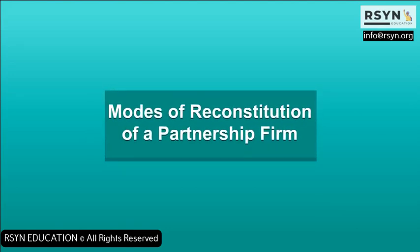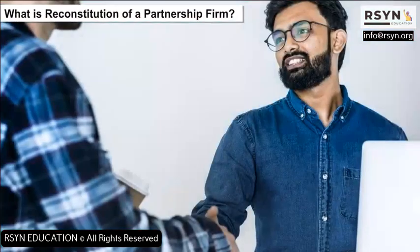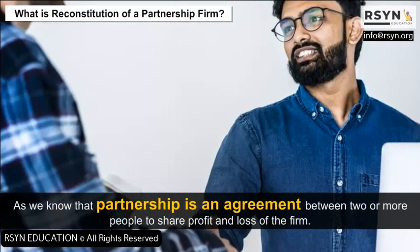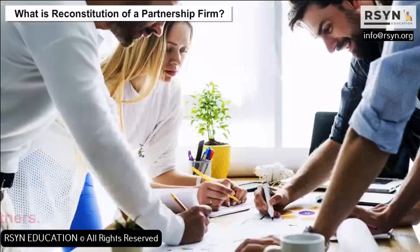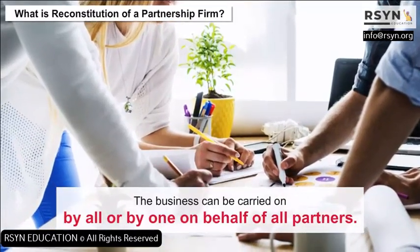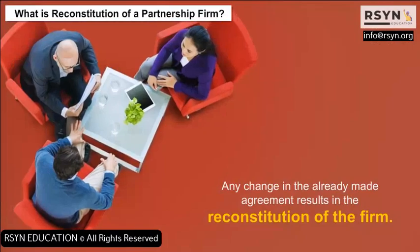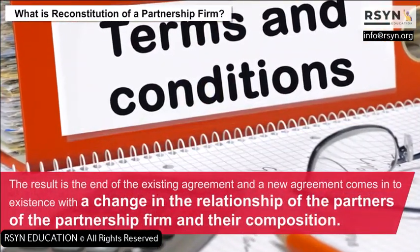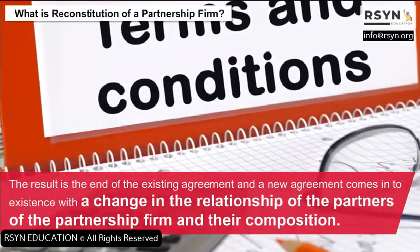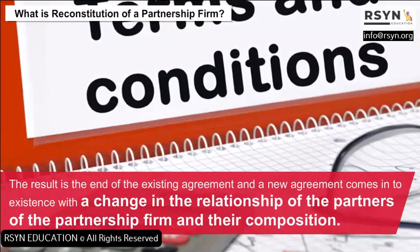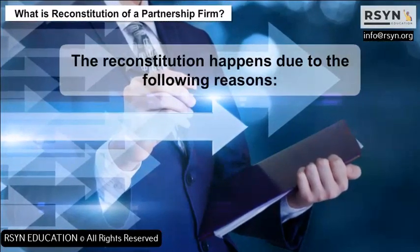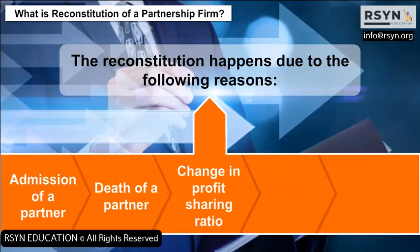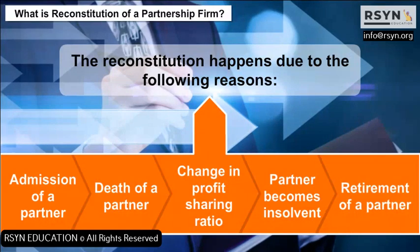Modes of Reconstitution of a Partnership Firm: As we know, partnership is an agreement between two or more people to share profit and loss of the firm. The business can be carried on by all or by one on behalf of all partners. Any change in the already-made agreement results in the reconstitution of the firm, ending the existing agreement and forming a new one. Reconstitution happens due to reasons like admission of a partner, death of a partner, change in profit sharing ratio, a partner becoming insolvent, or retirement of a partner.